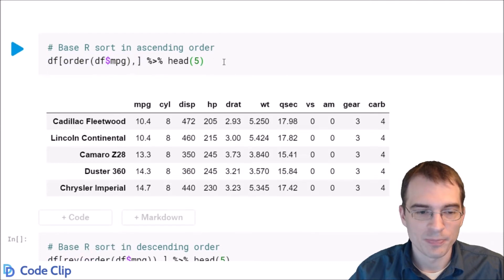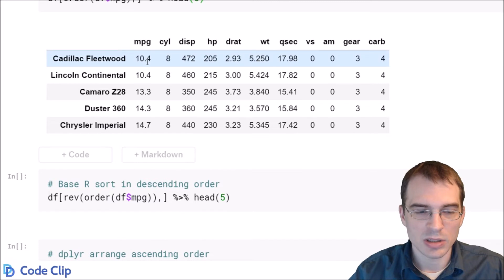We have that there, and as we see, the data frame has been sorted in ascending order by the mpg column. The smallest mpg's are first.